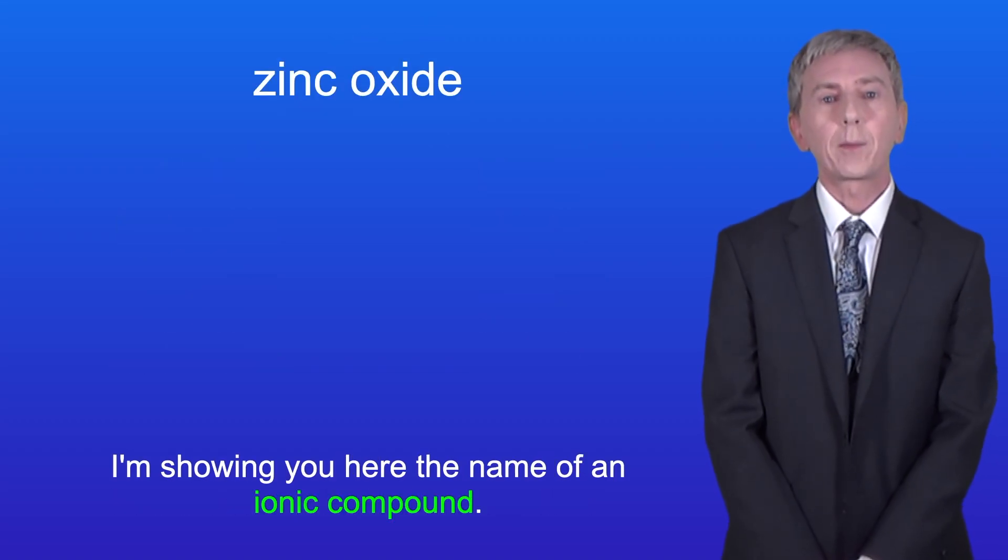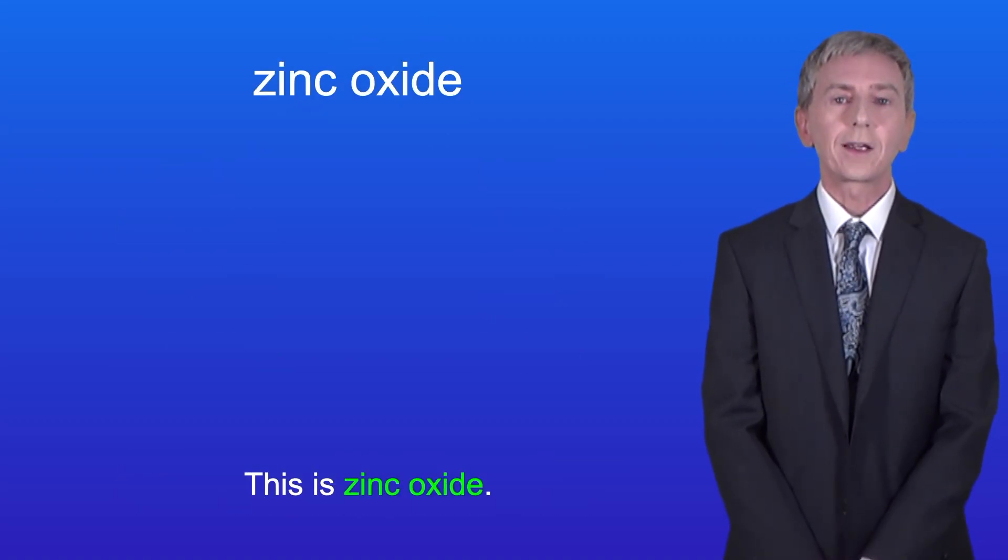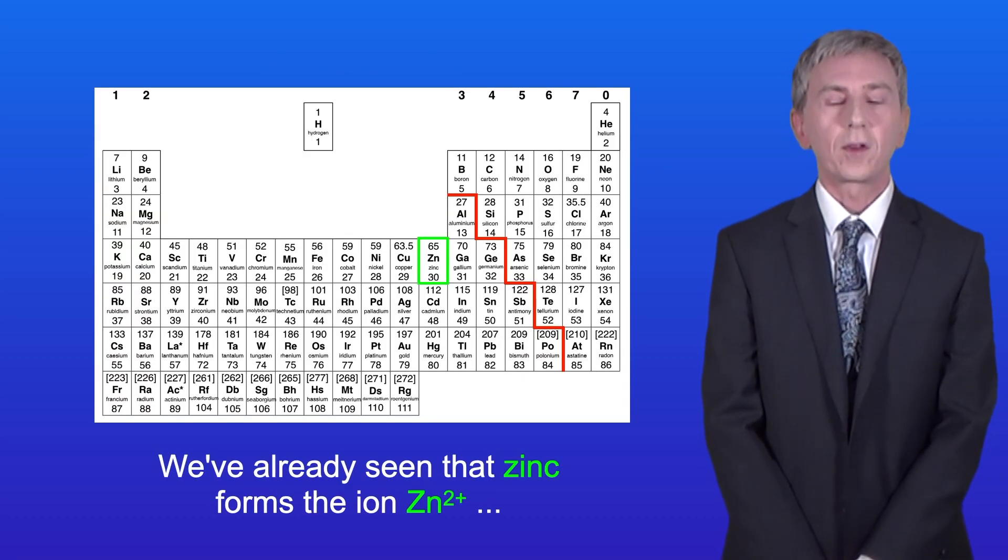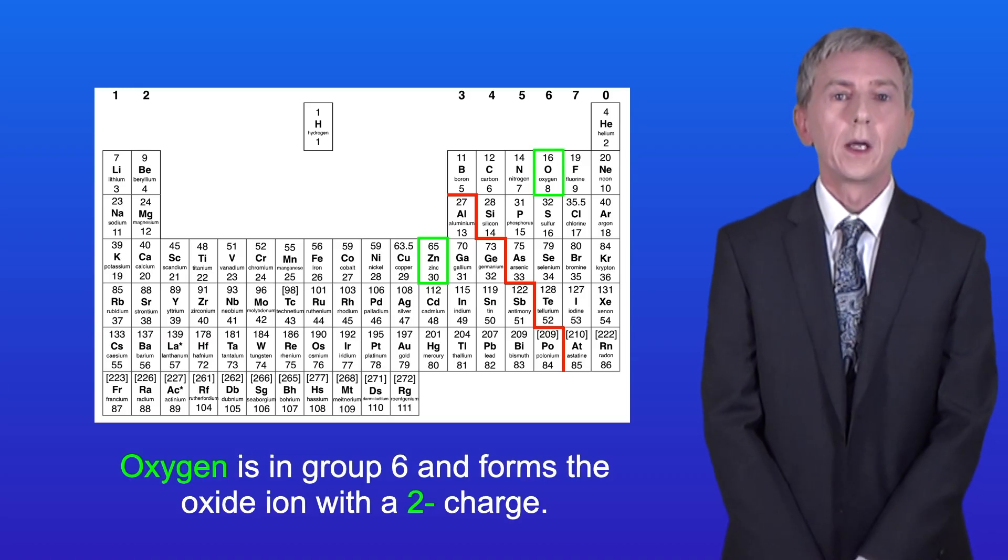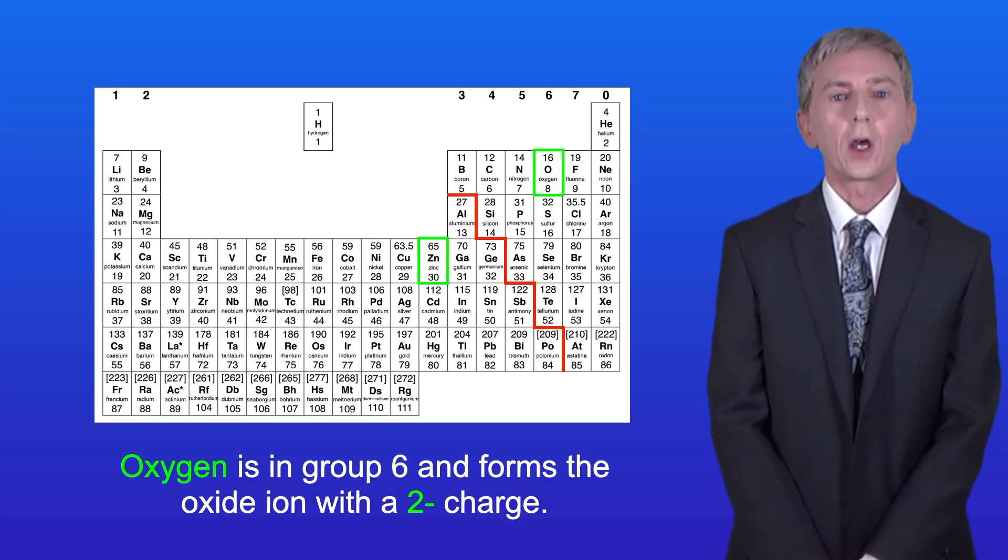I'm showing you here the name of an ionic compound. This is zinc oxide. We've already seen that zinc forms the ion Zn2+, and that's an ion that you need to learn. Oxygen is in group 6 and forms the oxide ion with a 2- charge.